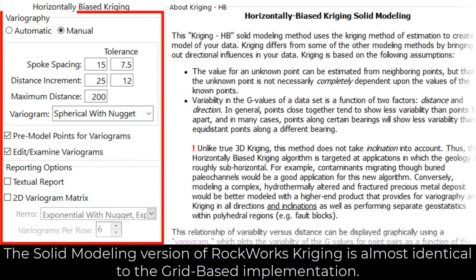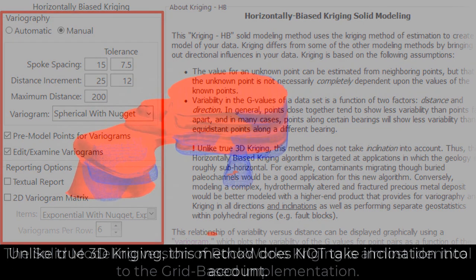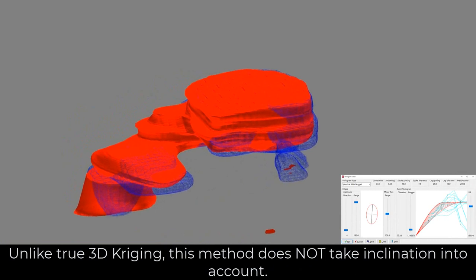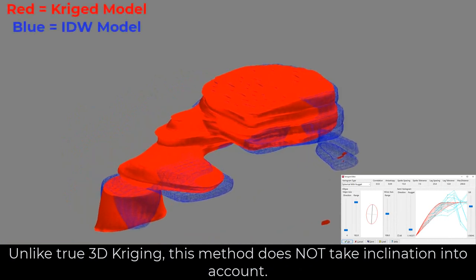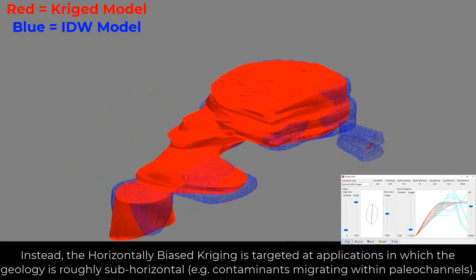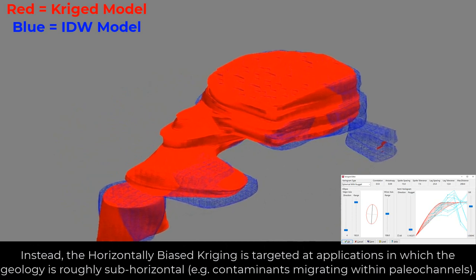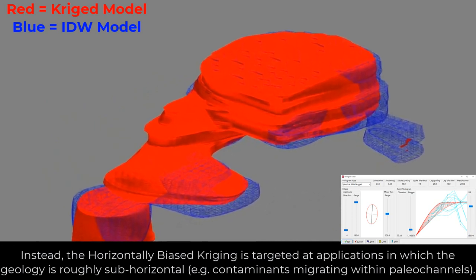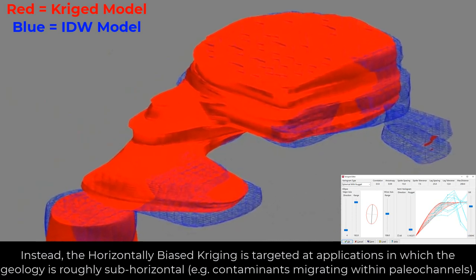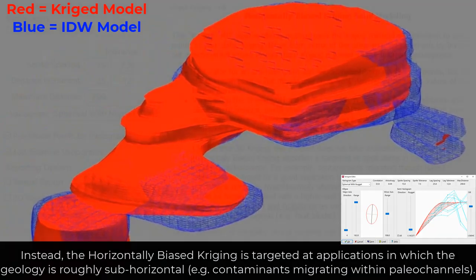The solid modeling version of Rockworks Kriging is almost identical to the grid-based interpolation. Unlike true 3-D Kriging, this method does not take inclination into account. Instead, the horizontally biased Kriging is targeted at applications in which the geology is roughly sub-horizontal, such as contaminants migrating within paleochannels.